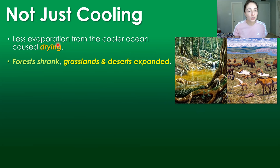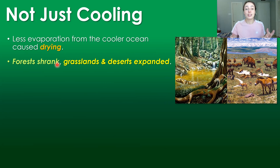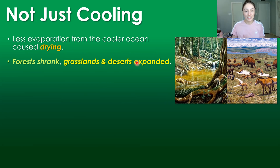Less evaporation from cooler oceans led to less water vapor in the atmosphere and just drier environments in general. Because of this, the densely forested environments of the Eocene — in the Paleogene period just before the Neogene, in the early Cenozoic — those forests began shrinking dramatically, because the drying of environments led to the shrinking of forests and the expansion of grasslands and eventually deserts.